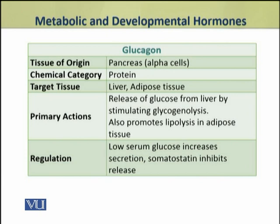Glucagon's primary action is to stimulate glycogenolysis. It also promotes lipolysis in the adipose tissues. The secretion of glucagon increases when the blood glucose level becomes low.